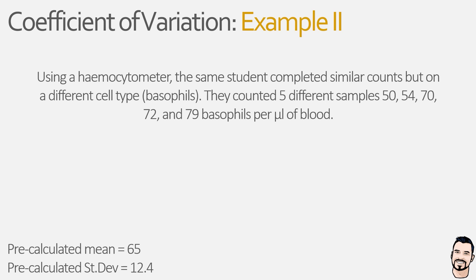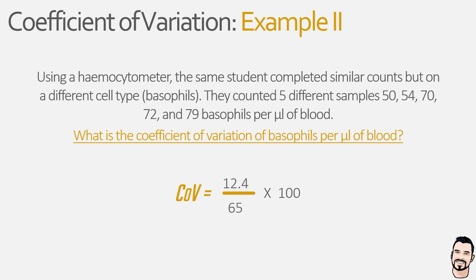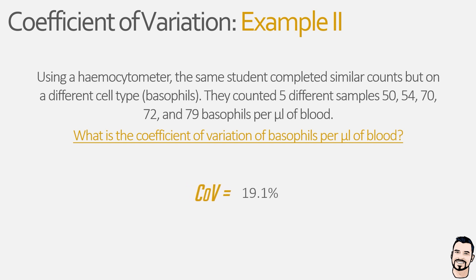The student now wants to know how dispersed their data is as a ratio of the mean — i.e., what is the coefficient of variation of basophils per microliter. Using our equation, s becomes the standard deviation and x-bar becomes the arithmetic mean. Dividing the standard deviation by the mean gives us 0.191, which is then multiplied by 100 to give us the coefficient of variation as a percentage — which for this dataset is 19.1%. This essentially means the data deviates from the mean by almost 20%, so we would expect to see most values 20% above or below the mean.